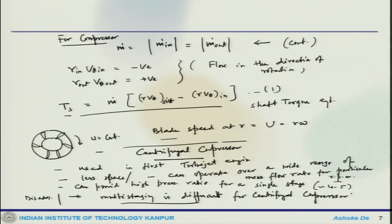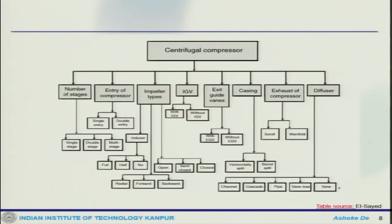There are certain advantages and certain disadvantages associated with the centrifugal compressor. But one thing is clear: for a single stage, it can provide a higher pressure ratio compared to an axial compressor. If you look at the classification of the different kinds of centrifugal compressor, this takes into account many things.